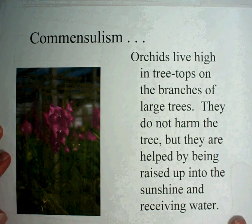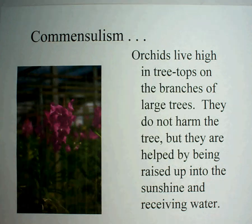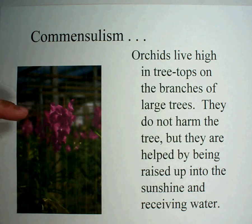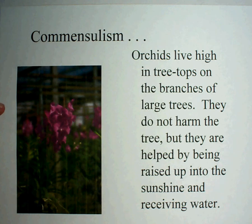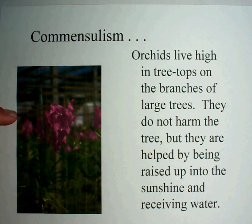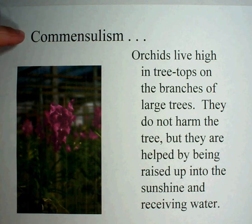The second type of symbiosis is called commensalism. In commensalism, one is helped and there is no effect on the other. Here's an example: orchids, a type of flower, live high in treetops in the branches of very large trees. They don't harm the tree, but they are helped by being raised up into the sunshine and receiving water. The tree holds the orchid up where it can get sunlight and water when it rains, but it doesn't hurt the tree at all — this is called commensalism. One is benefited and there's no effect on the other.